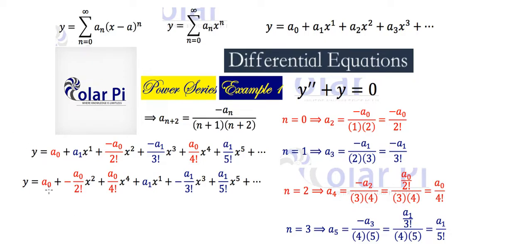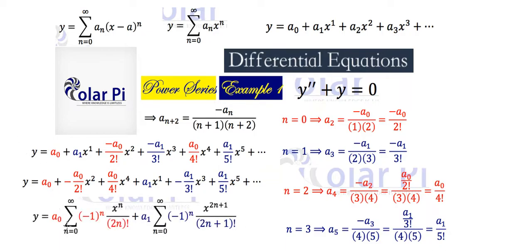Then factoring a sub zero out from all the even terms and a sub one out from all the odd terms, what we'll have left is a sub zero times the cosine series plus a sub one times the sine series. By grouping and factoring, our solution y equals a sub zero times cosine x plus a sub one times sine x.